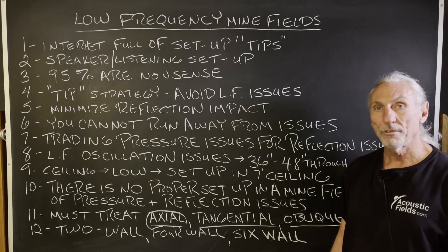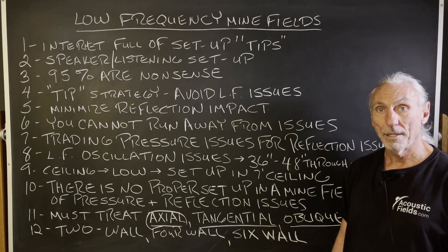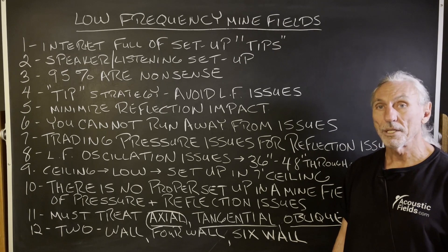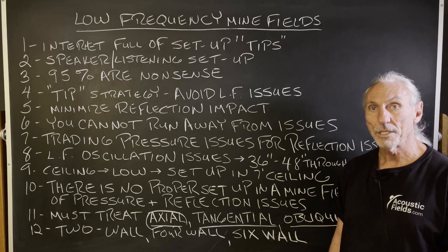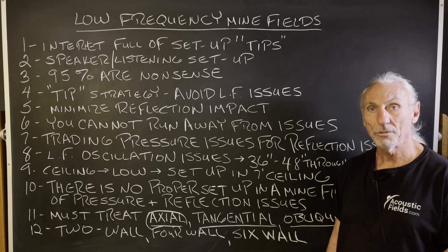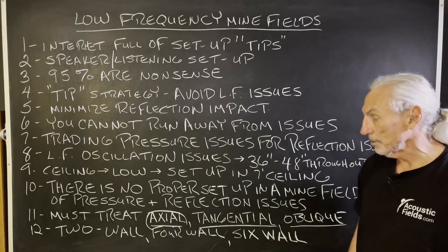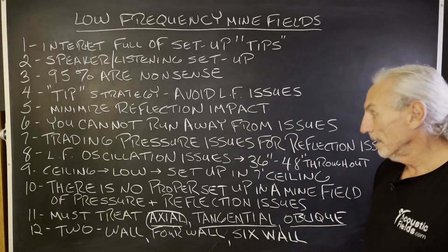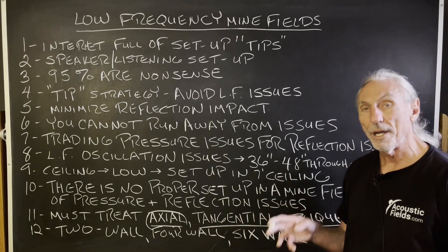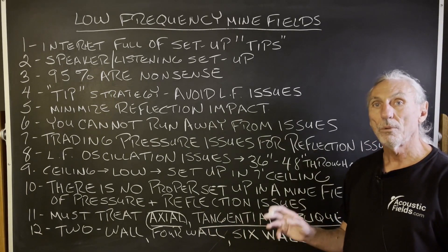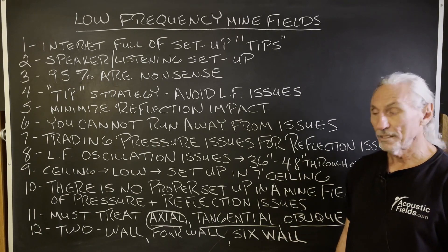Coincidental modes occur when you have pressure issues that are within five cycles of each other — they're even more audible than axial modes. I saw a room the other day with seven coincidental modes. The owner said, 'Dennis, this room sounds absolutely horrible all the time, no matter what I play.' He had six or seven coincidental modes starting at 80 all the way through 300. Of course it's going to sound bad. He has to treat the two-wall, four-wall, and six-wall issues.